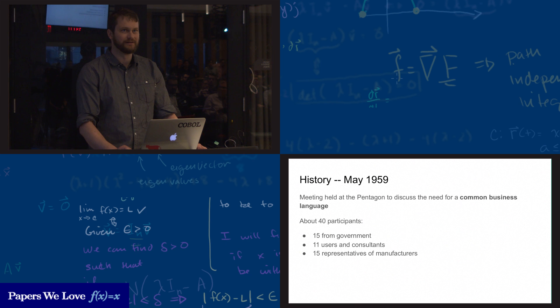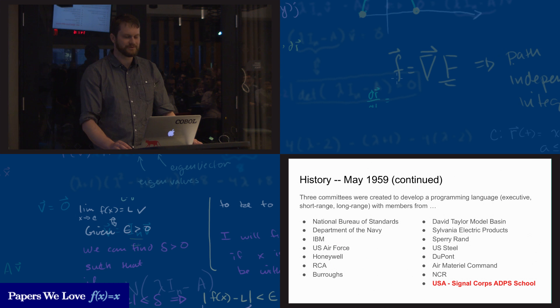Three committees were created to develop the programming language: the executive committee, the short-range committee, and the long-range committee. And there were members from these organizations that I have listed here. As you can see from the list of organizations, there's really not a lot of academic representation. The closest we've got is USA Signal Corps ADPS School, which I think might have been the aeronautical department, but I'm still not exactly sure.